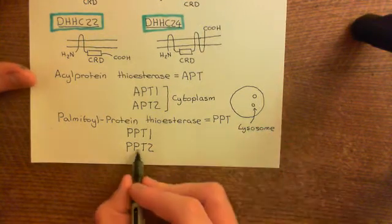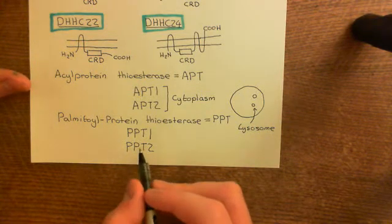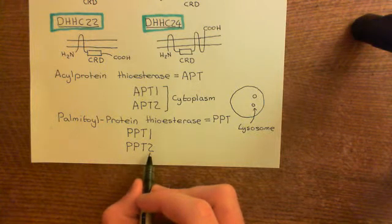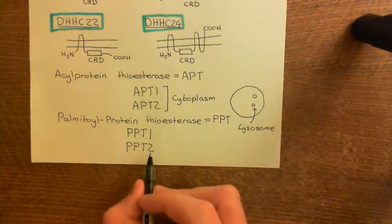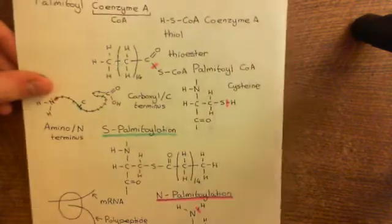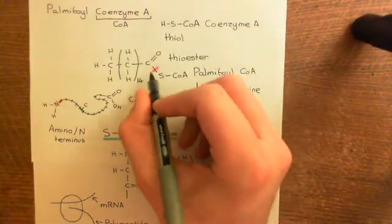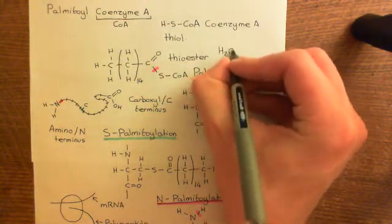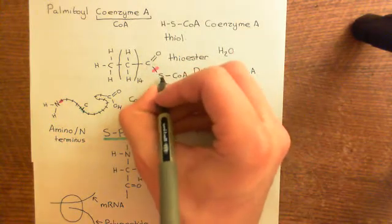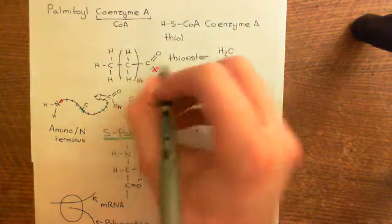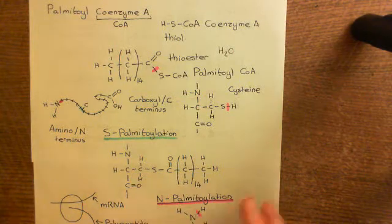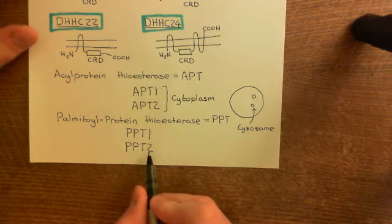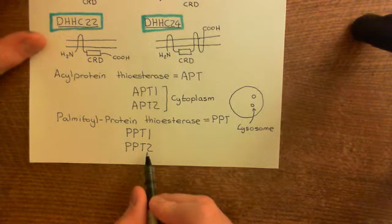PPT2 doesn't seem to do anything in vivo. In vitro — in the test tube — palmitoyl protein thioesterase 2 can cleave palmitoyl coenzyme A molecules, bringing in a water molecule and hydrolyzing it to produce a palmitic acid molecule and a coenzyme A molecule. But it is not capable of removing palmitoyl groups from cysteine residues on proteins.